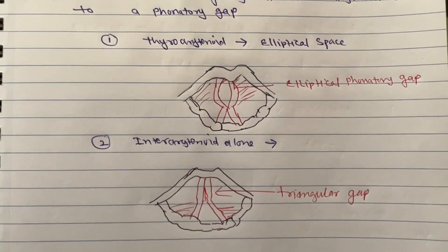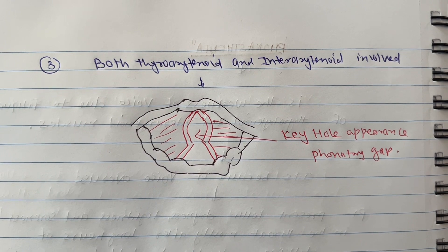If both muscles are involved, then there will be a keyhole appearance phonatory gap.